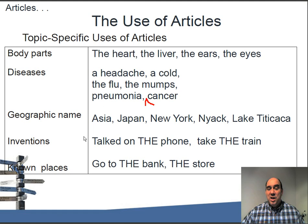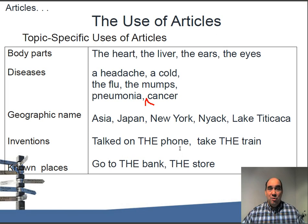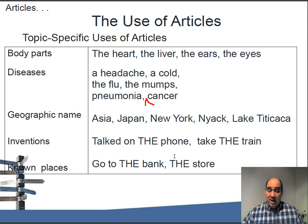Inventions tend to use articles: 'talk on the phone,' 'get the door,' 'get on the train' - generic concepts that everybody understands. Known places follow the same logic: 'she went to the bank,' 'going to the store.' Since both parties know what's being referred to, we add 'the.' When you look at all these different rules, the challenge is figuring out how to teach them all. I would begin by looking at similarities you can use repeatedly.